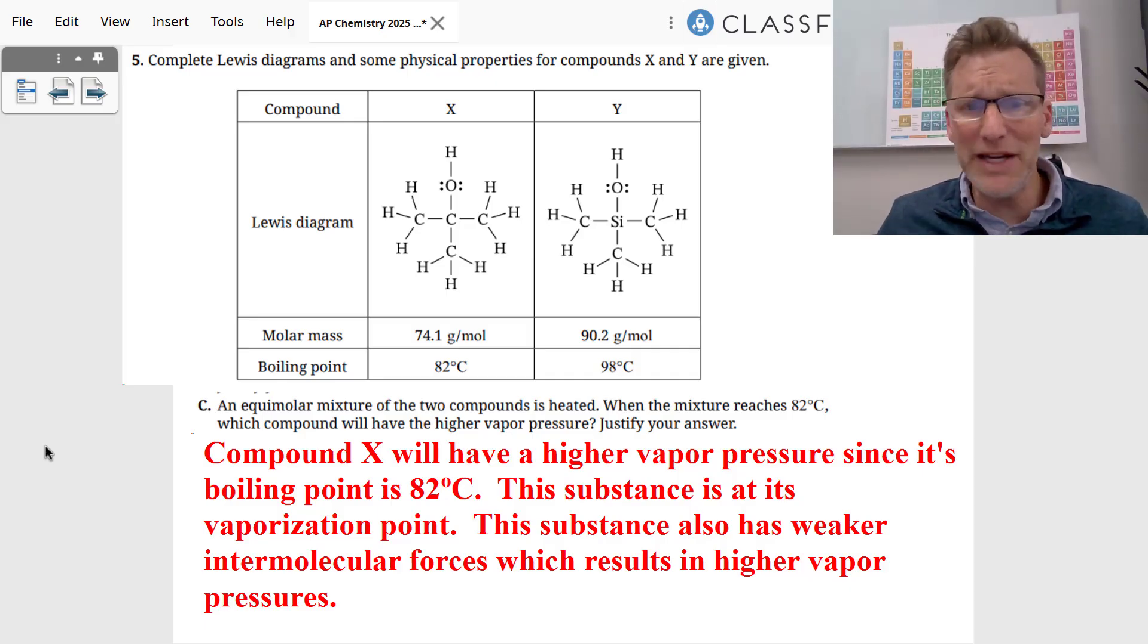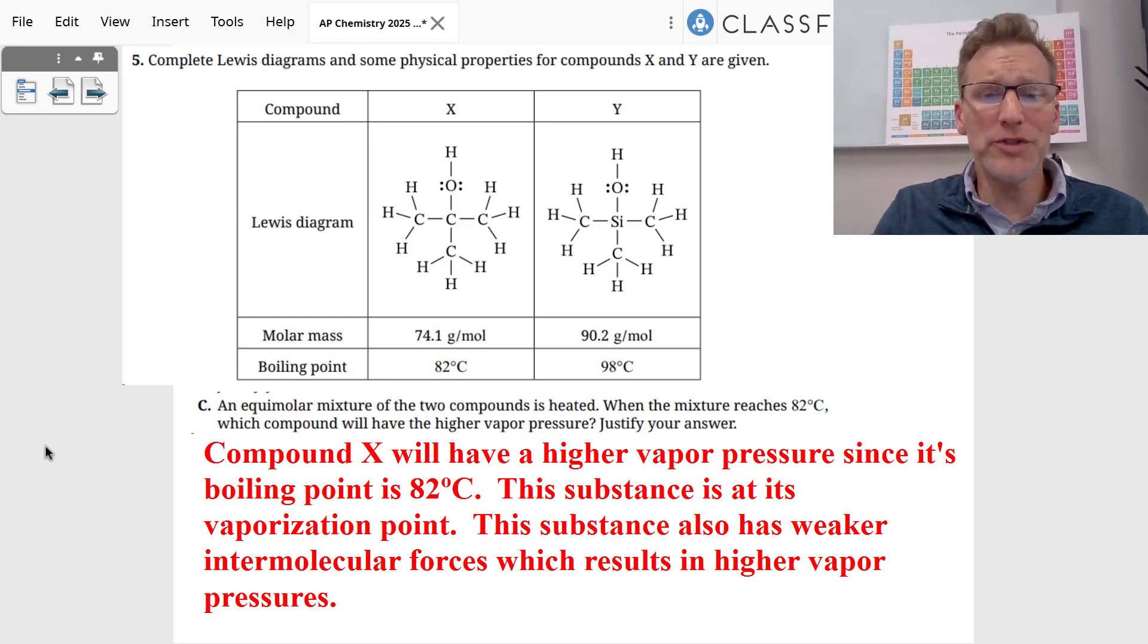Part C was we now combine these two substances into an equimolar mixture. When the mixture reaches 82 degrees Celsius, which compound will have a higher vapor pressure? Compound X will have a higher vapor pressure since it's at its vaporization point. The atmospheric pressure equals its vapor pressure. This substance also has weaker intermolecular forces, which results in higher vapor pressures.